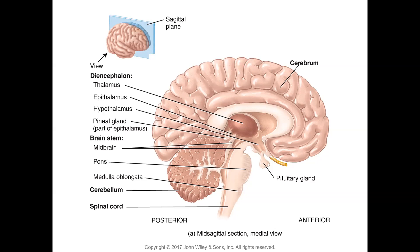The medulla oblongata is immediately superior to the spinal cord. It is the most vital part of the brain because it houses the respiratory center and the cardiovascular center, controlling breathing and heartbeat. It controls blood pressure, reflexes, and reflex centers for coughing, vomiting, and sneezing. Any brain injury causing swelling tends to push the medulla oblongata into the foramen magnum, which can cause death.